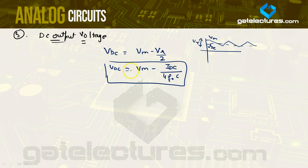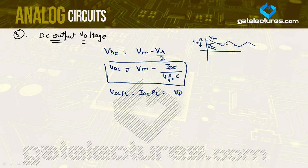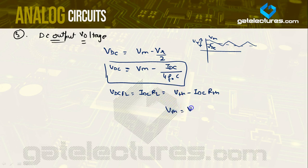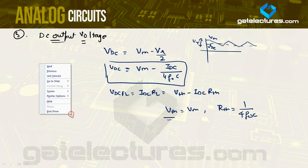This also behaves like a Thevenin equivalent circuit, where the DC output voltage VDC_FL equals IDC into RL. This equals V_Thevenin minus IDC into R_Thevenin, where V_Thevenin is basically Vm and R_Thevenin is 1 by 4f₀C.